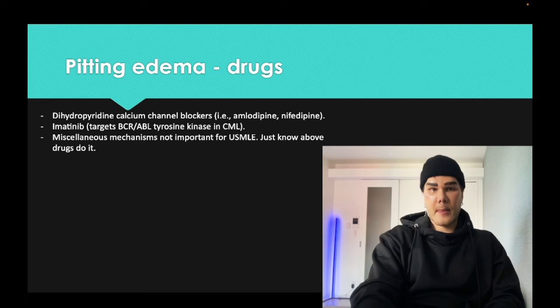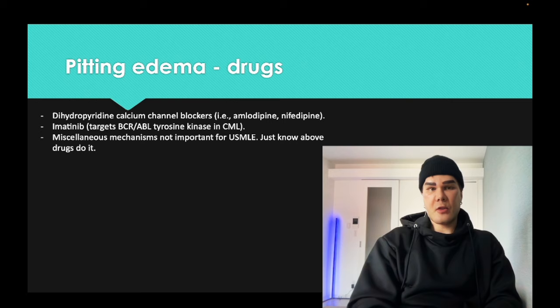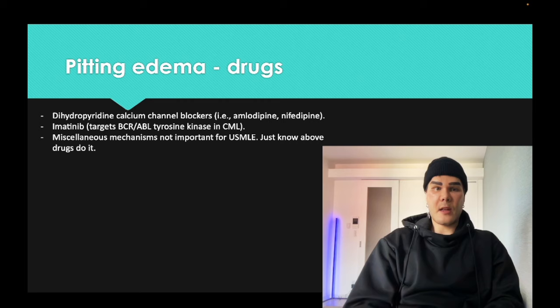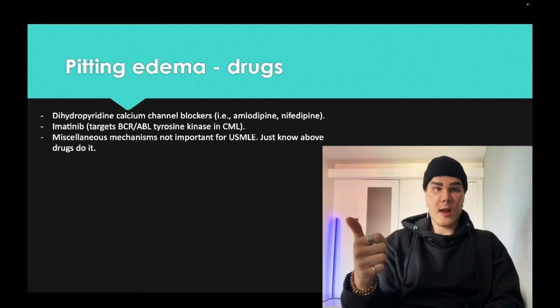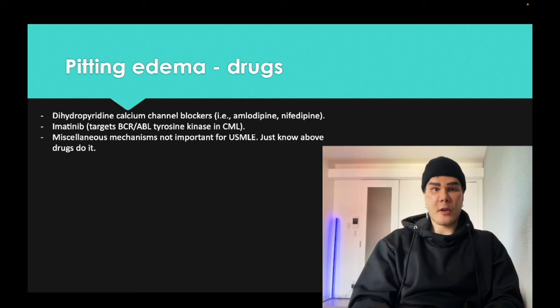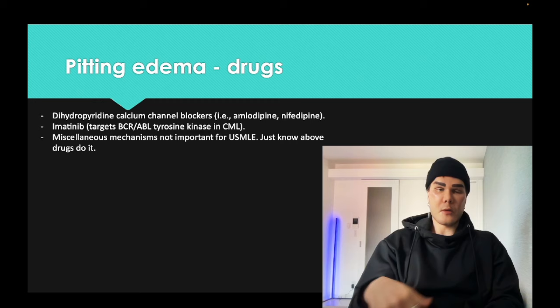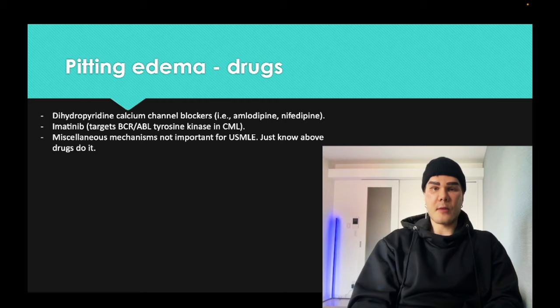Drugs: amlodipine, nifedipine — dihydropyridine calcium channel blockers — are exceedingly high yield, especially for Step 2CK family medicine, for causing peripheral edema. A classic scenario: a patient comes in with edema of the forearms and legs, you're thinking cardiogenic, hepatic, or renal causes, but the doctor checks the drug chart and sees they were started on amlodipine two weeks ago. The calcium channel blocker is causing the puffiness, and you just switch the pill. Don't confuse with verapamil, a non-dihydropyridine calcium channel blocker, which causes constipation. Dihydropyridine CCBs are used for hypertension.